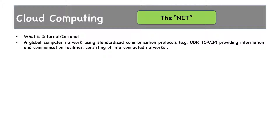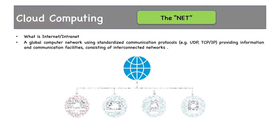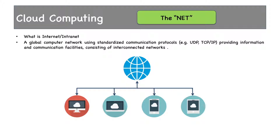The technical definition: a global computer network using standardized communication protocols — for example UDP, TCP/IP — providing information and communication facilities consisting of interconnected networks. We have thousands of routers provided by multiple internet service providers, and billions of devices each connected to each other using this global network.